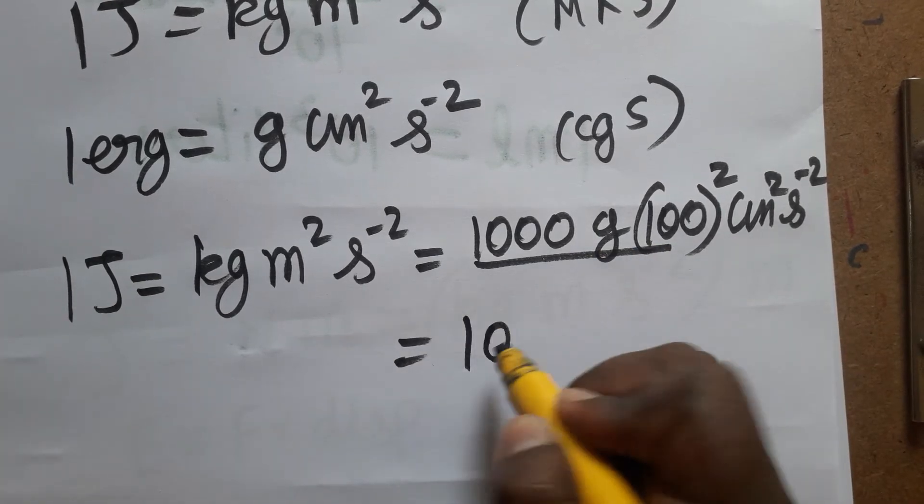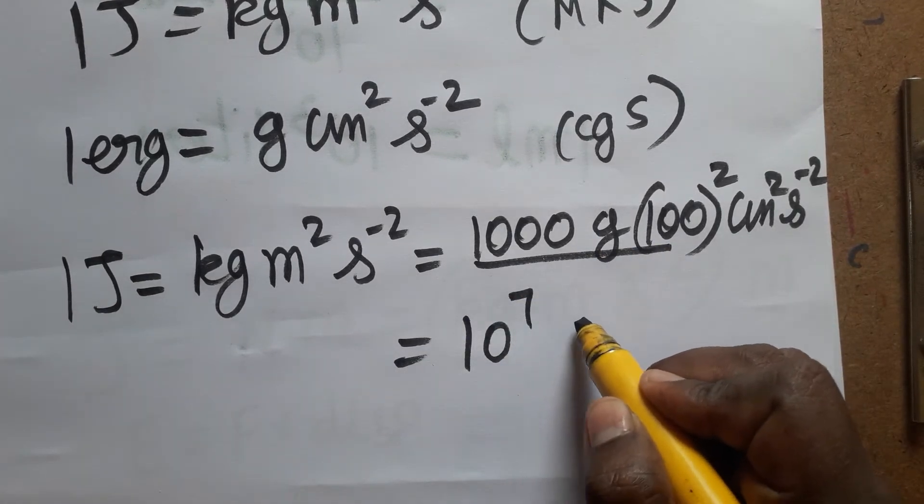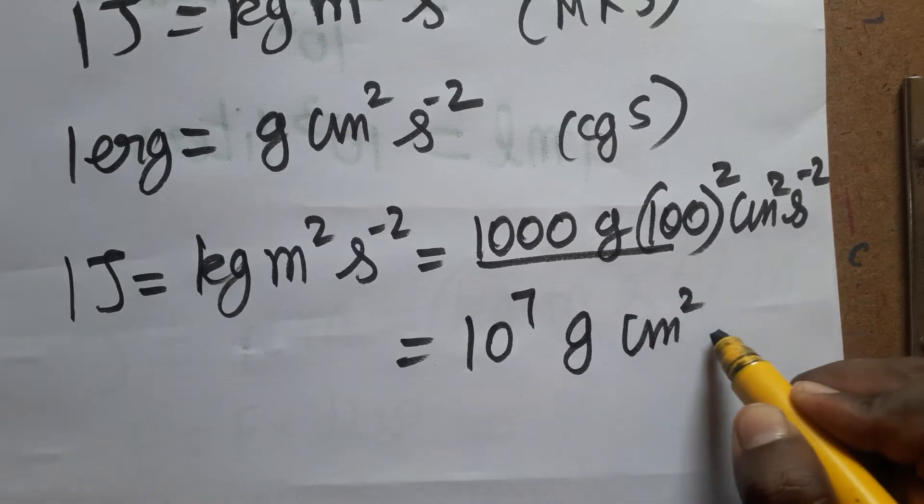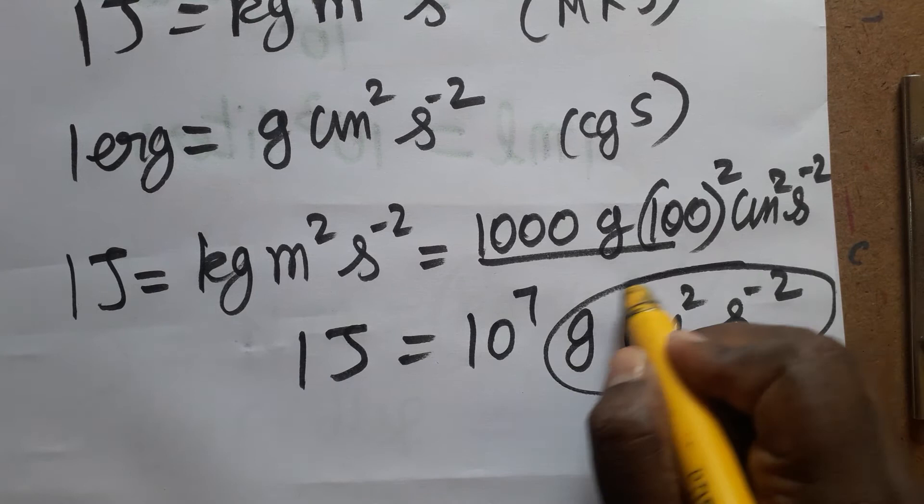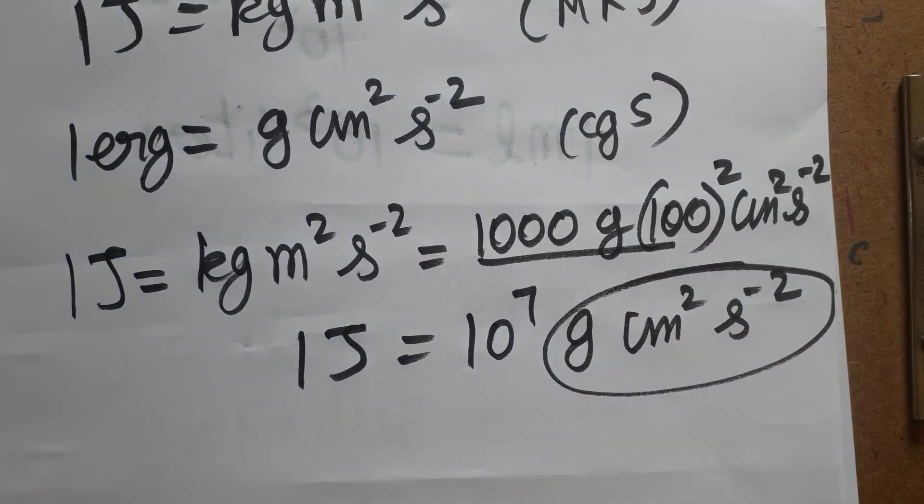So we will get 10 to the power 7, because 100 square is 10 to the power 7 gram centimeter square second minus 2. So we got finally 1 Joule is 10 to the power 7 erg.